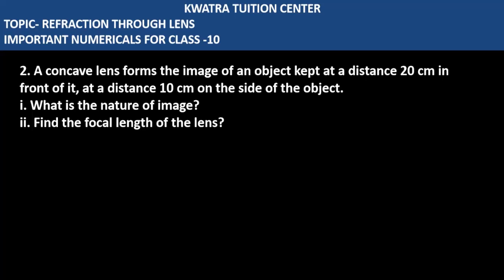Let's start with question number two. A concave lens forms the image of an object kept at a distance of 20 centimeters in front of it. The object distance given is u, which is minus 20 centimeters.